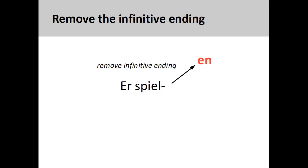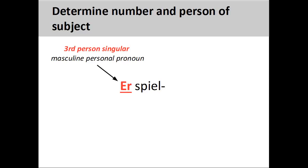To conjugate a verb, you first remove its infinitive ending. The next step is to determine both the number and person for the subject of the verb. Here, the subject is the third-person singular masculine personal pronoun 'er', 'he'.